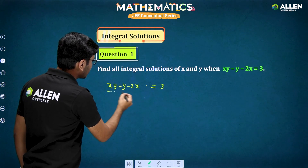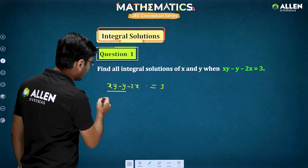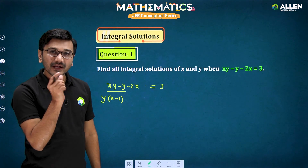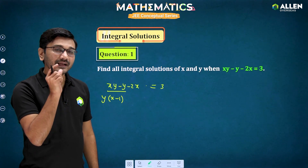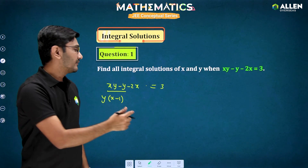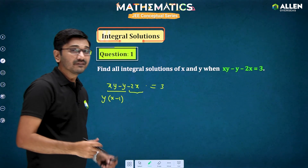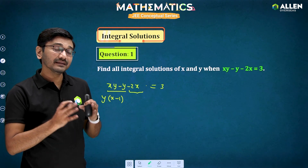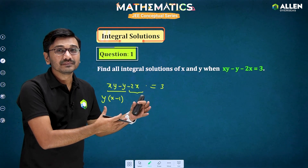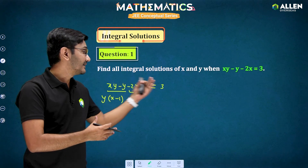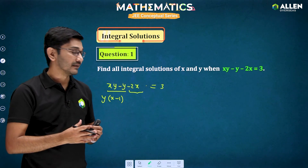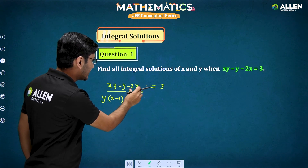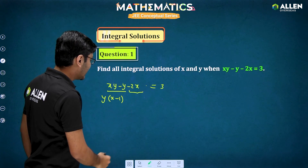From these two terms, xy minus y, if I take y common, I get x minus 1 as a factor. So I am getting one factor as x minus 1. If I can get x minus 1 as another factor from the remaining term, then I can factorize the left-hand side into two factors and similarly factorize the right side, and then compare. So what should I adjust to get x minus 1 common from minus 2x?